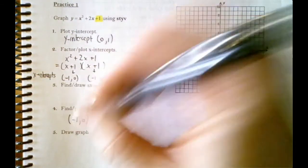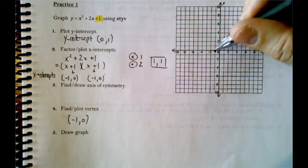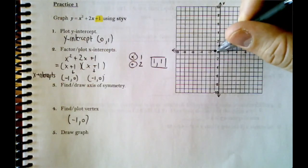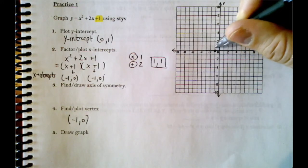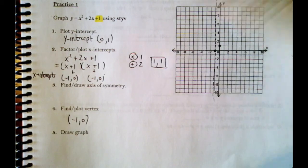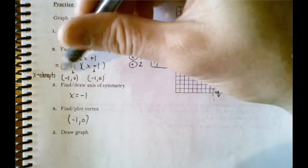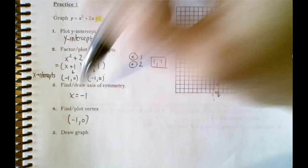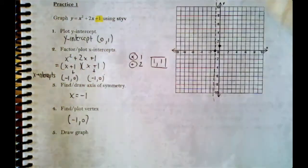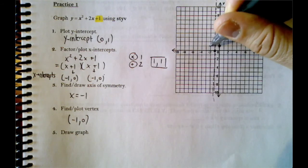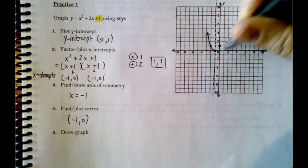When there's only one x-intercept, that point has to be the vertex. So (−1, 0) is the vertex. The axis of symmetry passes through the vertex at x = −1. We can verify: (−1 + (−1)) ÷ 2 = −2 ÷ 2 = −1. To draw the graph, we reflect the y-intercept (0, 1) across the axis to get (−2, 1), giving us a small parabola.